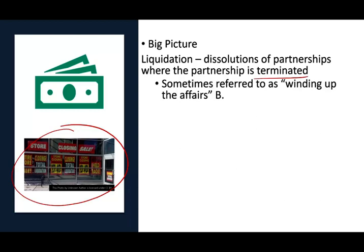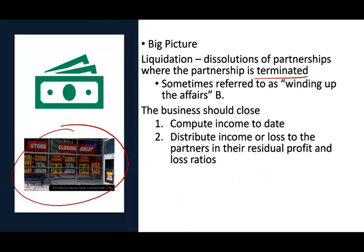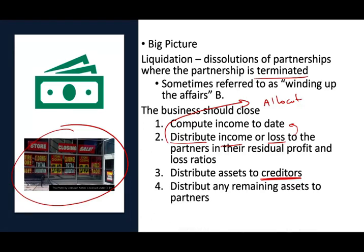From a logical perspective, when you close the business, you have to sell everything and compute your income to date. You sell all your non-cash assets, compute income to date, then allocate income or loss to the partners in the residual profit or loss ratio. Then you distribute the assets to creditors — we have to determine how to distribute them because we have many types of creditors. Then you distribute any remaining assets, usually cash, to partners based on their capital balance, versus allocating profit or loss which is based on the profit and loss ratio.